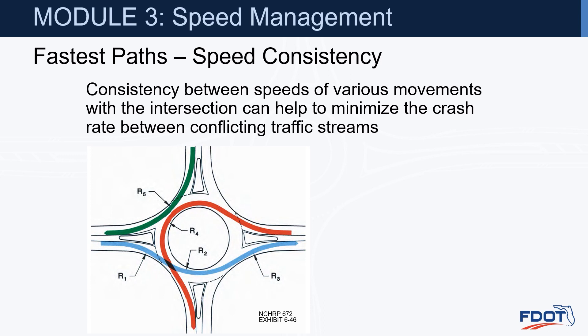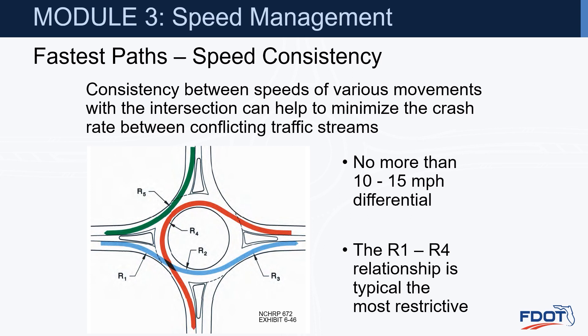Another important consideration is speed consistency — the consistency between speeds of various movements within the intersection can help minimize the crash rate between conflicting traffic streams. We want no more than 10 to 15 miles per hour differential between all five speeds. The R1 and R4 relationship is typically the most restrictive. In general, if you're meeting the design standards of 25 mph or less for single lane and 30 for multi-lanes, you should be able to meet the speed consistency requirement as well.